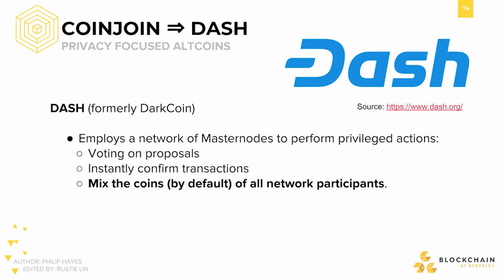Users who run masternodes are tasked with performing privileged actions such as voting on proposals for network governance, instantly confirming transactions, and mixing coins. The idea here is that we have better plausible deniability because everyone is forced to go through CoinJoin for mixing, so this makes for a much larger anonymity set.